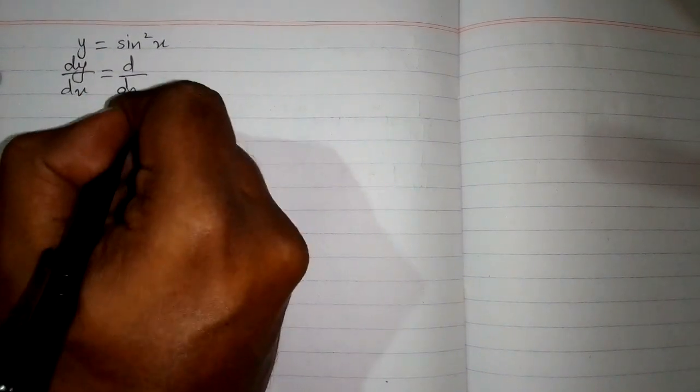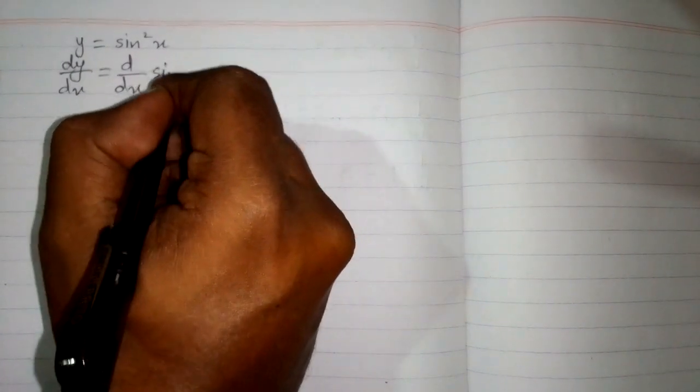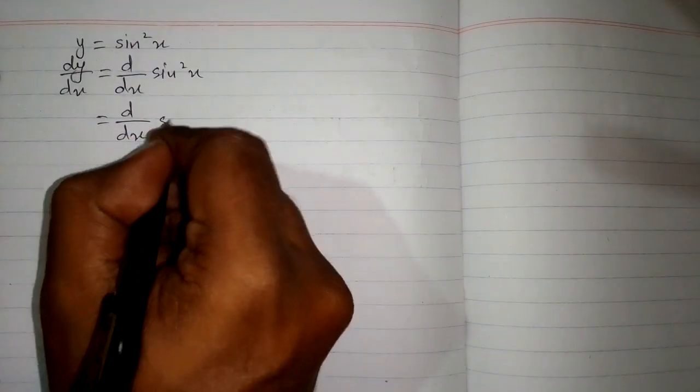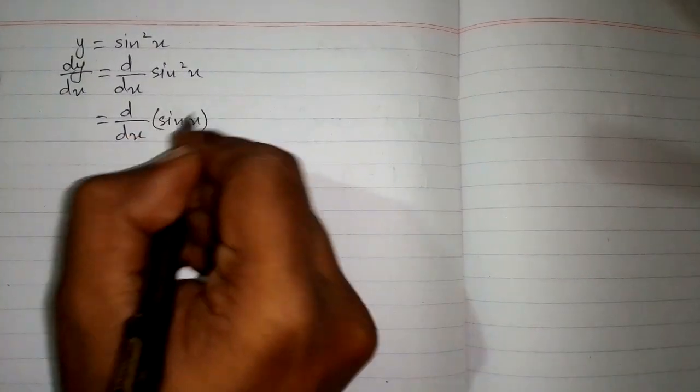In this video we will find the derivative of the function y = sin²x. First, we differentiate both sides with respect to x, so we have dy/dx = d/dx of sin²x. This can be written as d/dx of (sin x)².